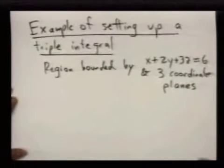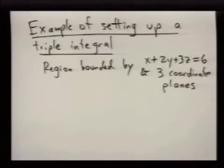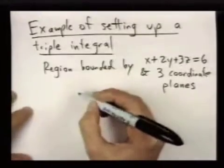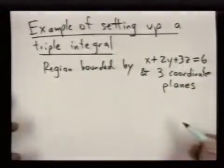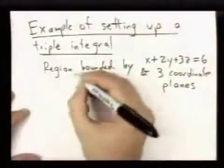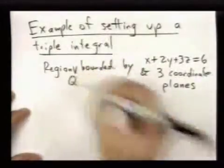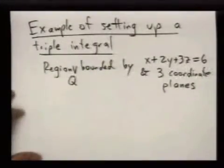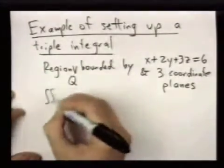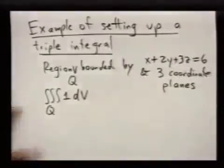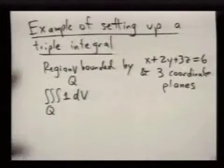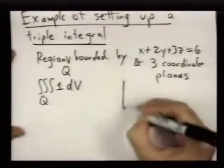So the first thing to do is to draw a good picture of this. And just to keep things concrete, let's call this region Q, and say we want to find the volume of this. So we're really finding the triple integral of the function 1 over Q. And now let's try to plot the actual region.